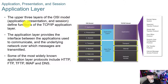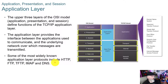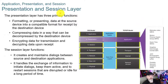Let's take a look first at the application, presentation, and session. The upper three layers of the OSI model — application, presentation, and session — define functions of the TCP/IP application layer. In the TCP/IP model, those layers have all been collapsed into one layer. The application layer provides the interface between the applications used to communicate and the underlying network over which the messages are transmitted. Some of the most widely known application layer protocols include HTTP, FTP, TFTP, IMAP, and DNS.